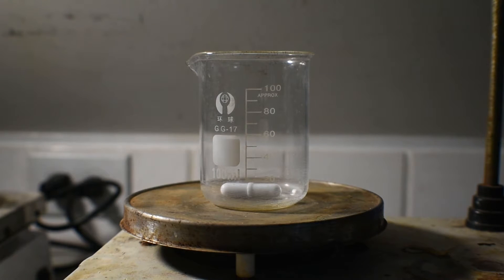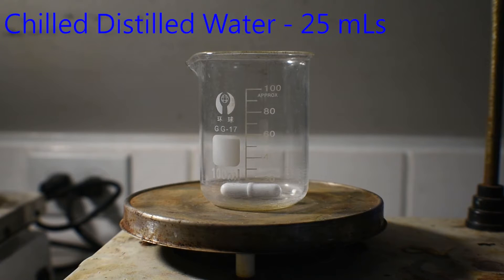While the cobalt chloride is dissolving, I have put, on a separate stir plate, a 100 milliliter beaker complete with stir bar. To the beaker, I'm going to add the 25 milliliters of chilled distilled water.